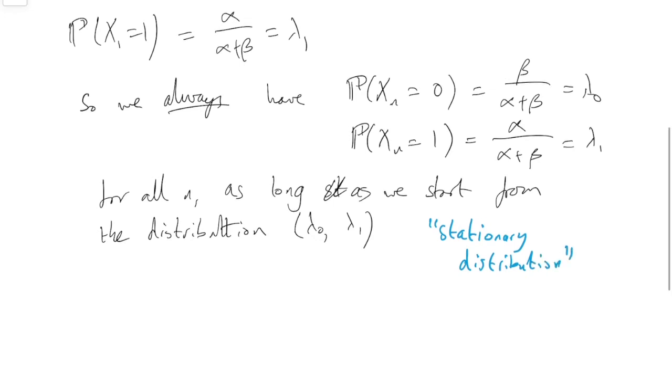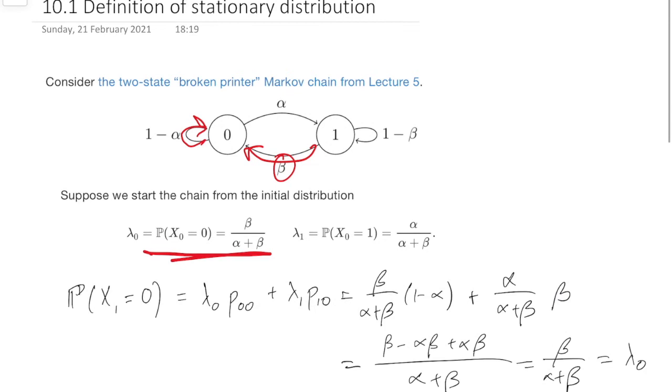Note that we're not saying that the Markov chain stays in the same place, right? The Markov chain can still move from 0 to 1 to 1 to 0. But if you say, ah, what's the probability that it's in state 0 at time n? It doesn't actually matter what n is. We've got this kind of steady state thing going on.